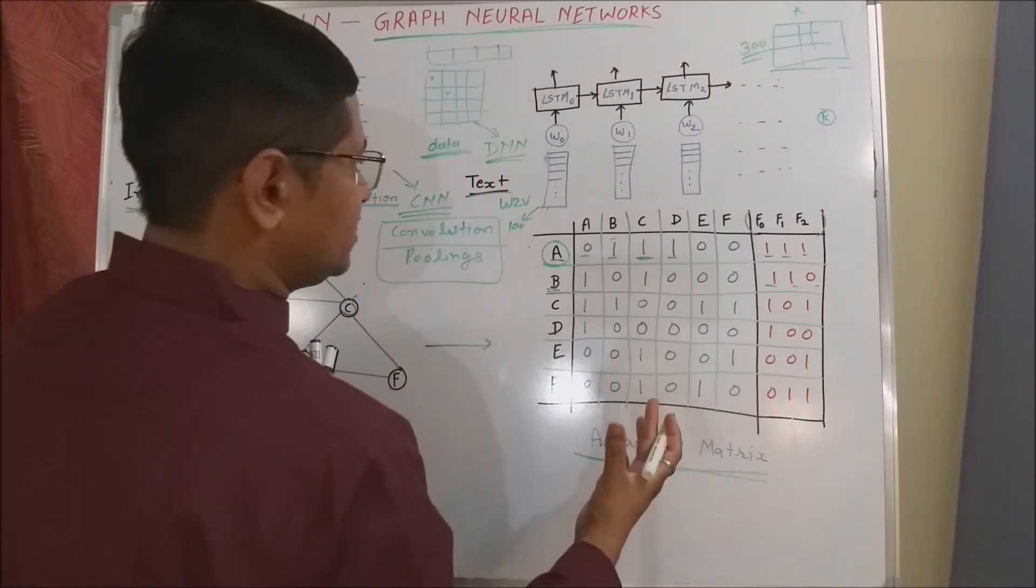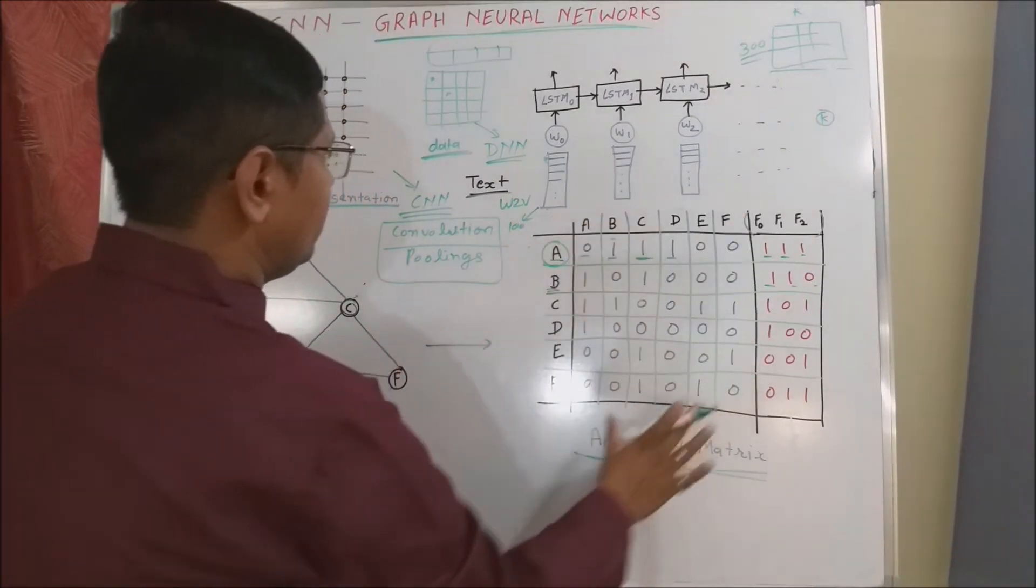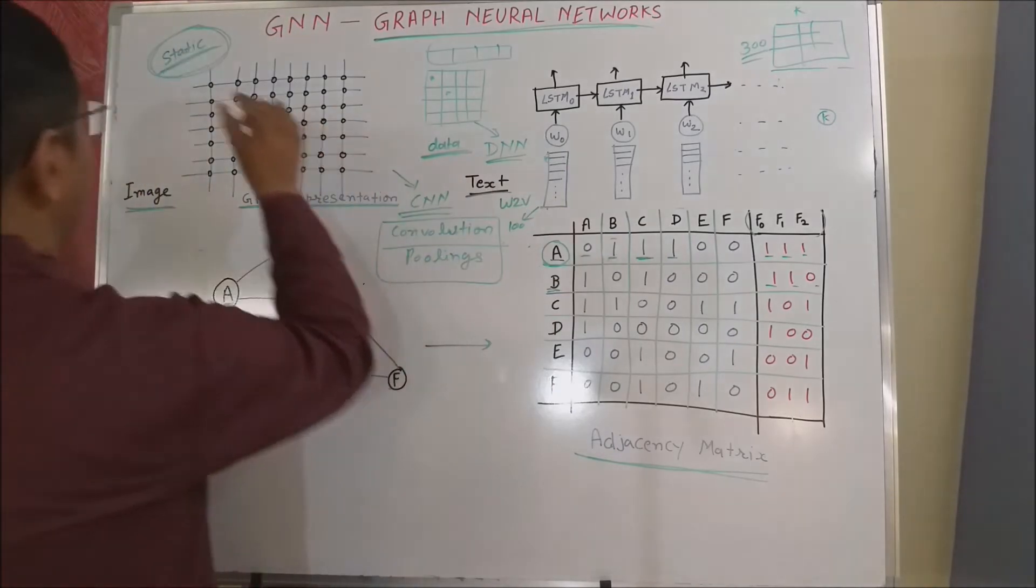But the major problem is we cannot directly apply this adjacency matrix effectively with any of these neural network arrangements. Let us try to understand what type of problem we will face if we convert the graph into a static kind of representation.